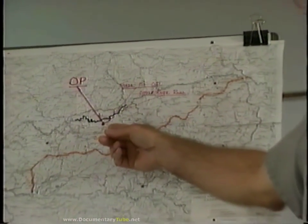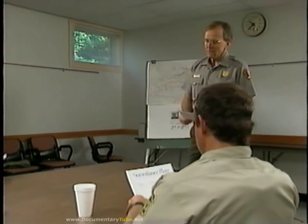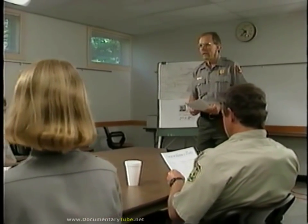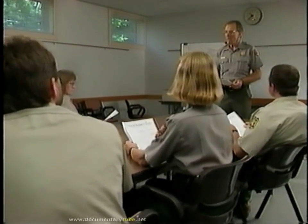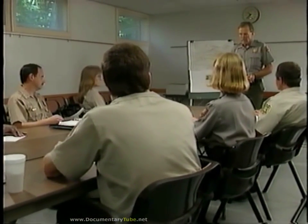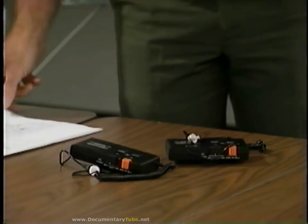The briefing should cover the nature of the surveillance, what the objective is, and all individual assignments. It should also include all known information on the subjects and their known accomplices, as well as a detailed description of the area where the surveillance is to take place. The placement of the observation post, ingress and egress routes, and all time schedules should also be discussed. Equipment, supplies, and clothing requirements and limitations should be understood by all participating officers. If there are any questions concerning any part of the mission, they should be answered now — not when you're out in the field.